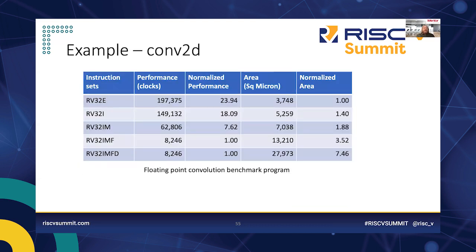Here are benchmark examples of the functions we've discussed. For the 2D convolution benchmark on a full RV32G processor: compiled for RV32E (16 registers), it ran in nearly 200,000 clock cycles. Compiled for RV32I (32 registers), we got about a 25% speedup — roughly as expected. Adding the M extension (hardware multiply instructions instead of software emulation), it ran in only 62,000 clocks — a dramatic improvement showing why matching instruction sets to the algorithm is critical.